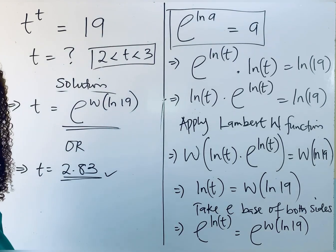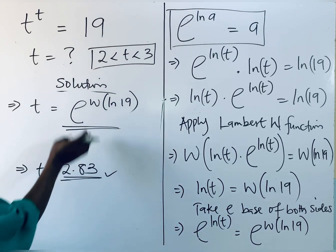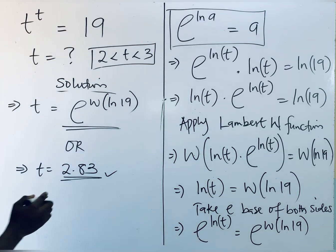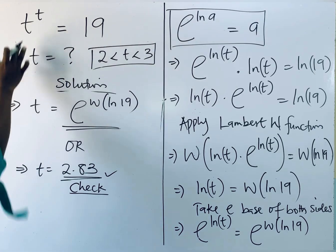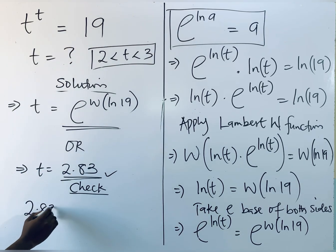Now we're going to also do a little check. Put this value of t in here and let's see if it gives us 19. So to check, we're going to have this t, which is 2.83, raised to the same power, to the same number.